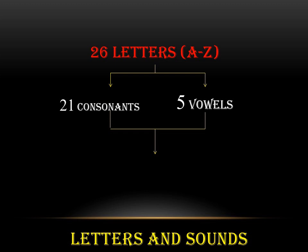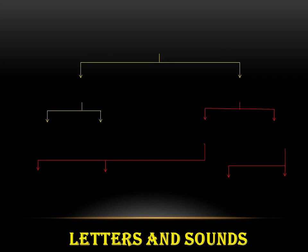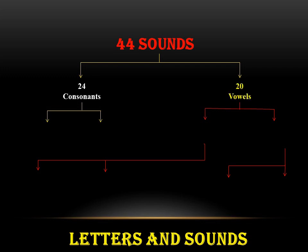The vowels are A, E, I, O, U. These 26 letters produce 44 different sounds in the English language. These 44 sounds are divided into two categories: the first one is consonants, which are 24 in number, and the second one is vowels, which are 20 in number.